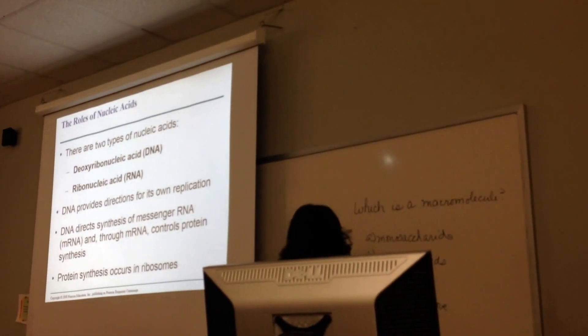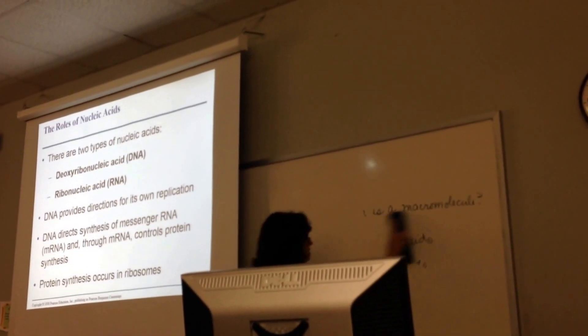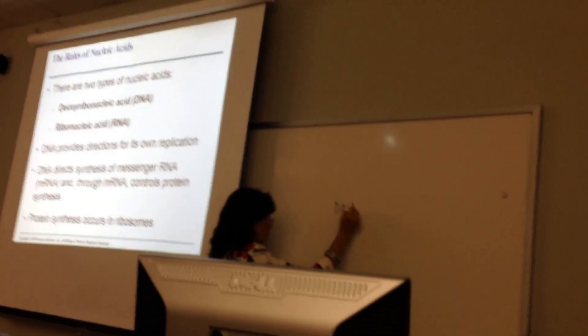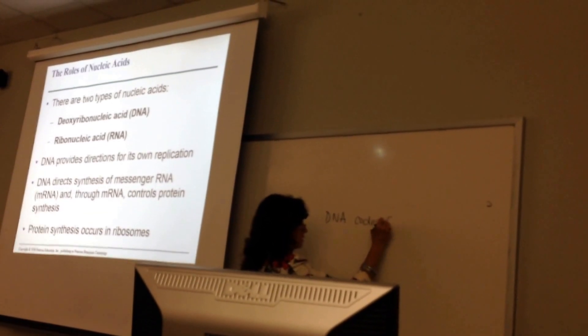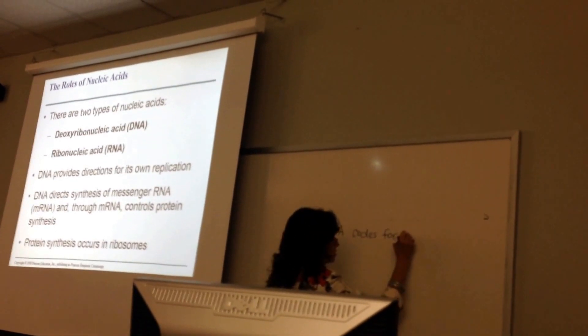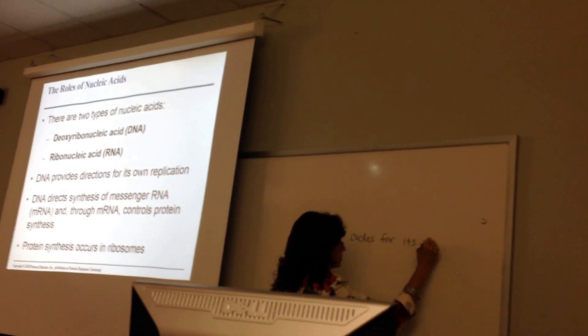So when it copies itself and it's going to make a new cell, it's got to copy its DNA or the new daughter cell is not going to have DNA in it. Makes sense, doesn't it? So the two important things that DNA does, remember it's like the brains, it's got the directions. DNA codes for its own replication. That's important because we need DNA in the new daughter cells.